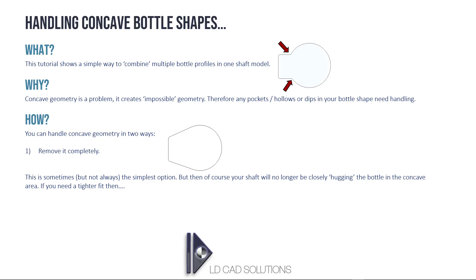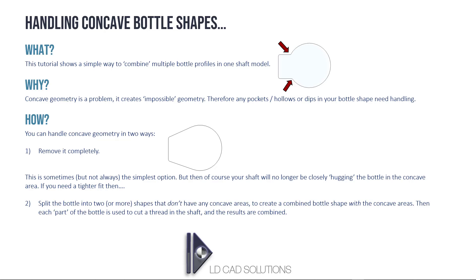In many cases that might be fine and you may still have the control of the bottle that you need. But if you need a really tight fit, you might need to consider option two, which is not much more complex — in fact it's very straightforward. All you have to do is split the bottle into two or more shapes that don't have any concave areas, creating a combined bottle shape which does include the concave areas. You use each part to cut a separate thread in the shaft and combine the results. The app does this combining for you.